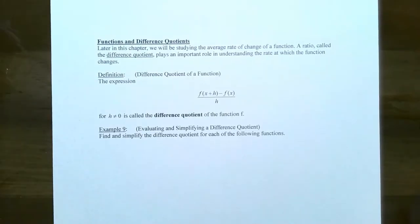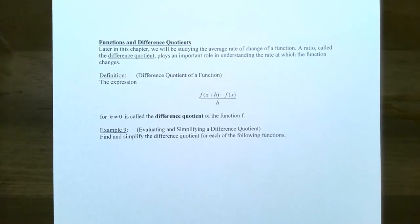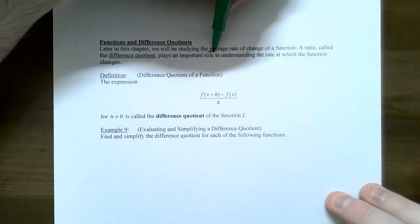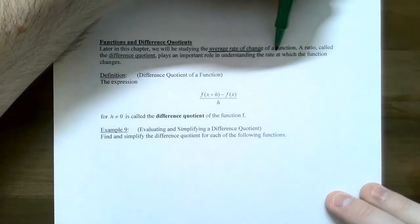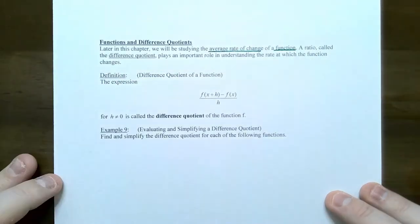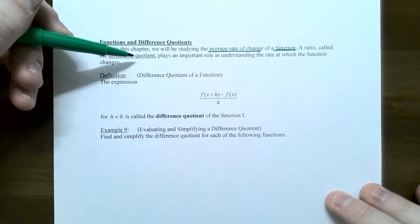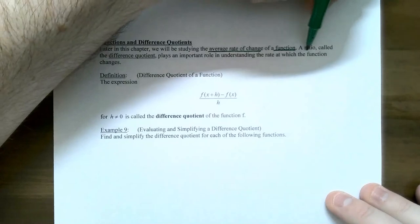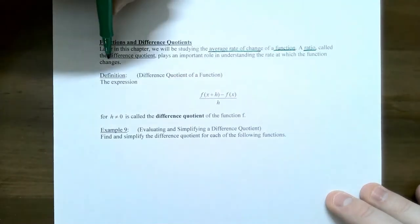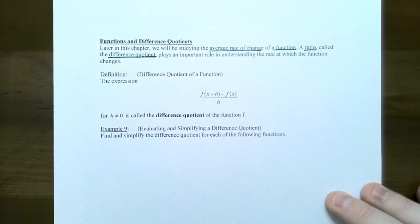So let's talk about a function's difference quotient. We're going to need it later in this chapter when we study the average rate of change of a function. A difference quotient — its name gives itself away. It's a difference of two different function notations and it's also a quotient, or ratio. It plays an important role in understanding the rate at which a function changes, and you might see this if you take a calculus course in the future.